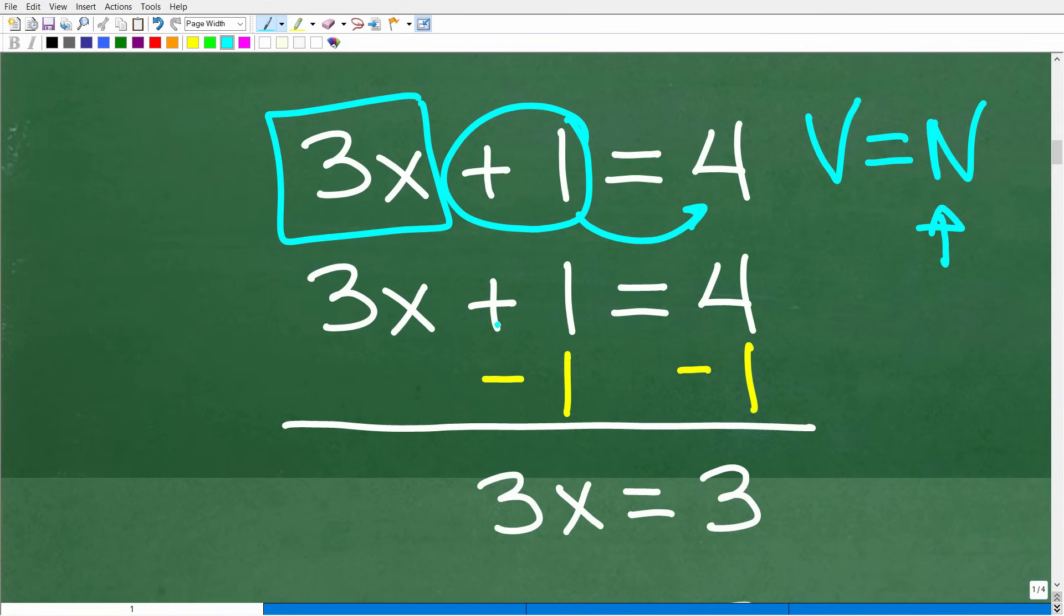And the way we can do that is by subtracting 1 from both sides. So if I have 3x plus 1 and I subtract 1 from this plus 1, that basically is going to make this 1 disappear on the left-hand side. But if I subtract 1 on this side of the equation, I've got to also do it on this side of the equation. Again, I'm not trying to teach you how to solve equations in this little video.